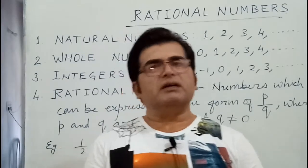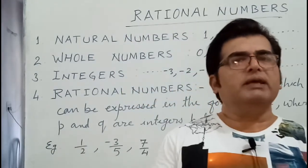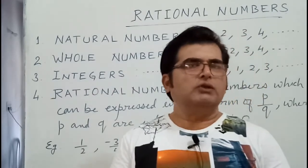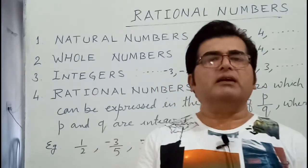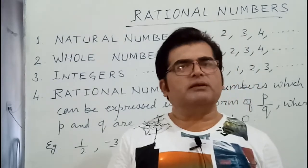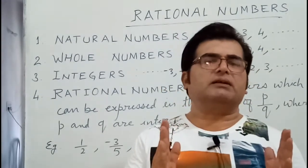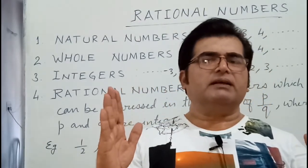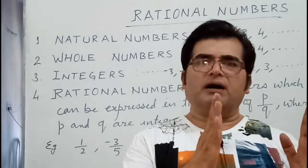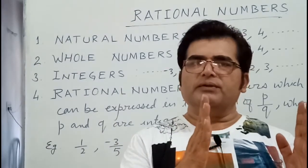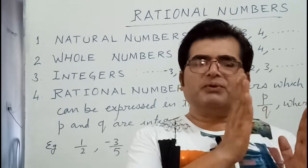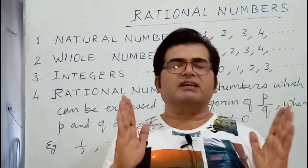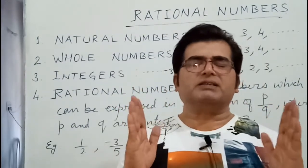We can express rational numbers on number lines. Also we can find unlimited number of rational numbers between two rational numbers. For example, you have a distance. Then to cover the distance, first you will have to cover half, 1 upon 2. Before that you will have to cover half, 1 upon 4. Before that you will have to cover half, 1 upon 8. So there are infinite rational numbers between two rational numbers.